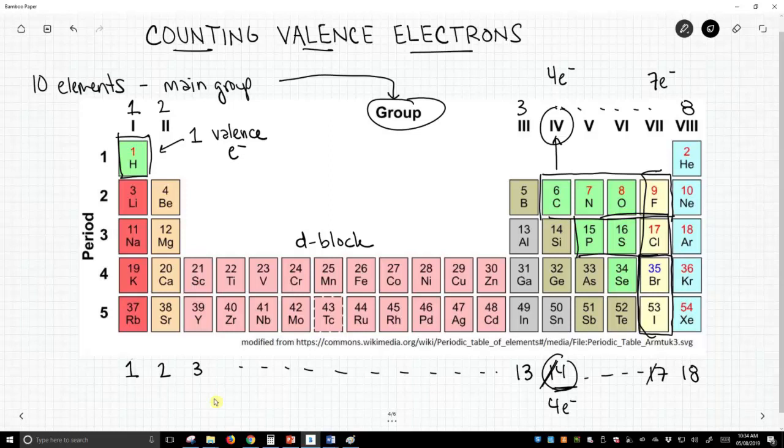Same for the halogens. Instead of 17, it's 7 electrons. So if we can look at a periodic table, we can very quickly figure out how many valence electrons a particular neutral atom will have.